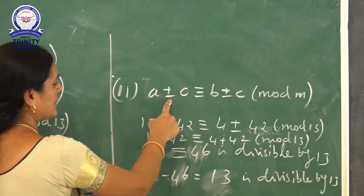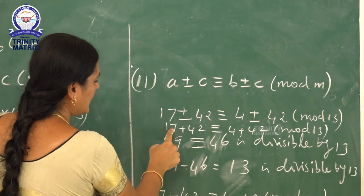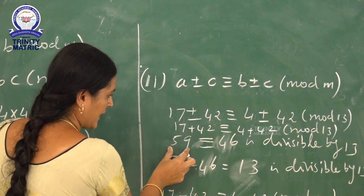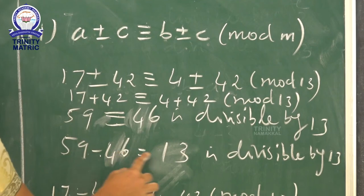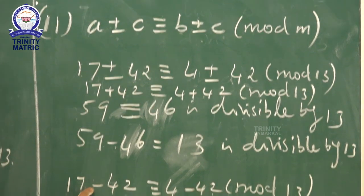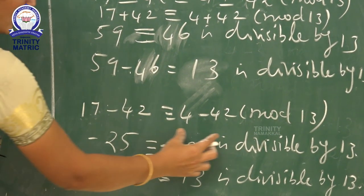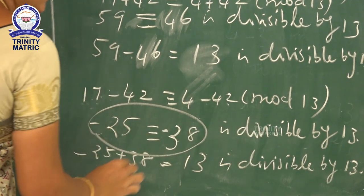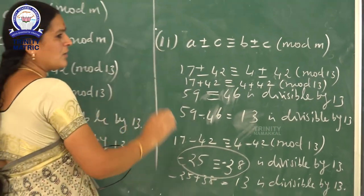The next condition of Theorem 6 is: A plus or minus C congruent B plus or minus C mod M. Applying the plus sign: 17 plus 42 congruent 4 plus 42 mod 13, giving 59 congruent 46 mod 13. The difference is 13, and 13 is divisible by 13. Applying the minus sign: 17 minus 42 congruent 4 minus 42 mod 13, giving minus 25 congruent minus 38. The difference is 13, and 13 is divisible by 13. So the second condition is also verified.